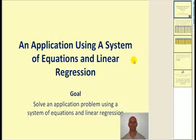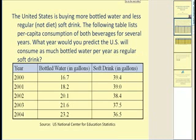In this video, we'll take a look at an application using a system of equations, but we'll first obtain the system of equations by performing linear regression. Here's what we have. The United States is buying more bottled water and less regular soft drink.